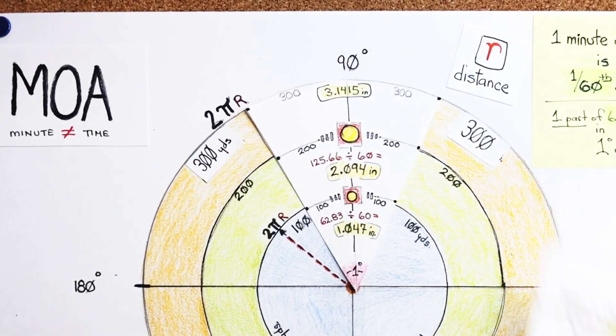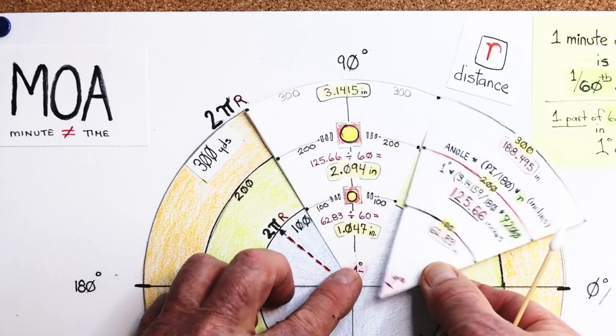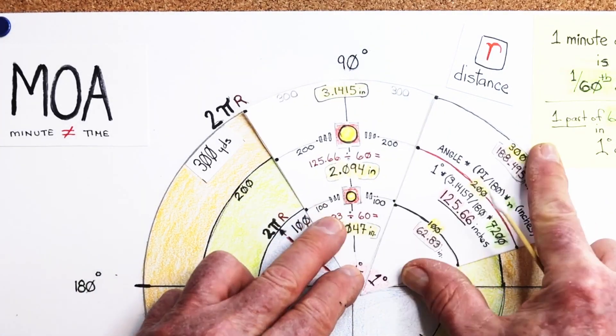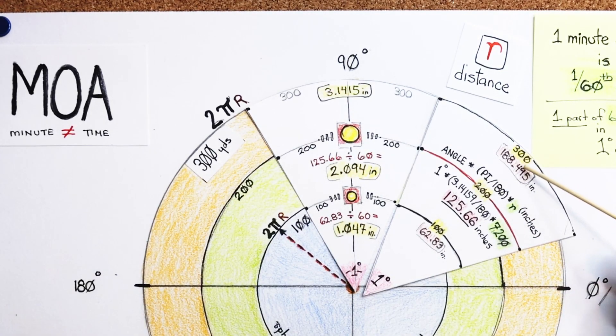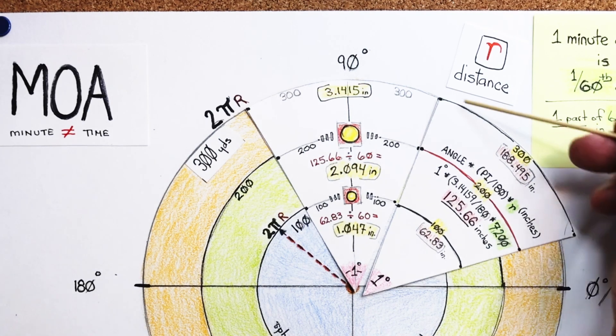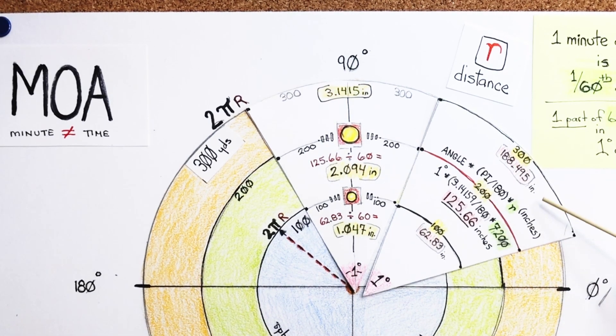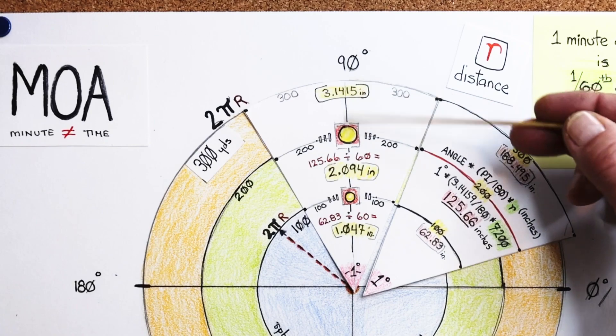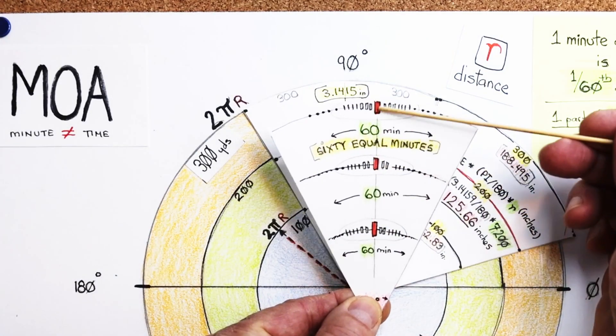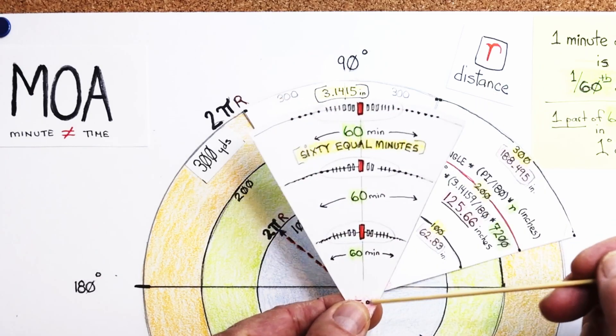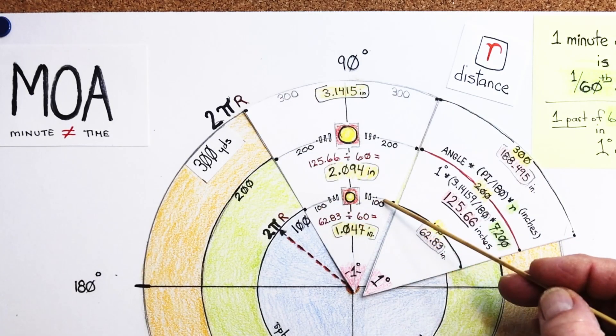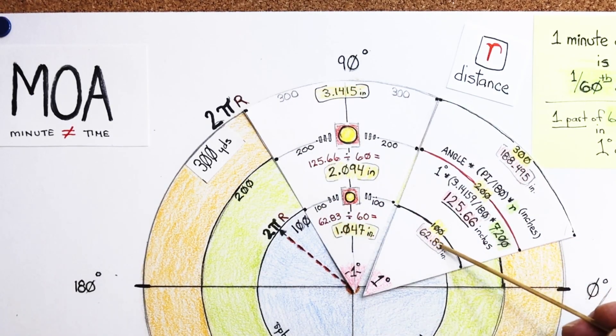We're going to take that number that we had before. We're going to take these values. We're going to take 188.495 inches. The total length here, we only want one part. I only want one part of the 60 units across. And this one degree that goes out at 100 yards, and I have 62.83 inches.